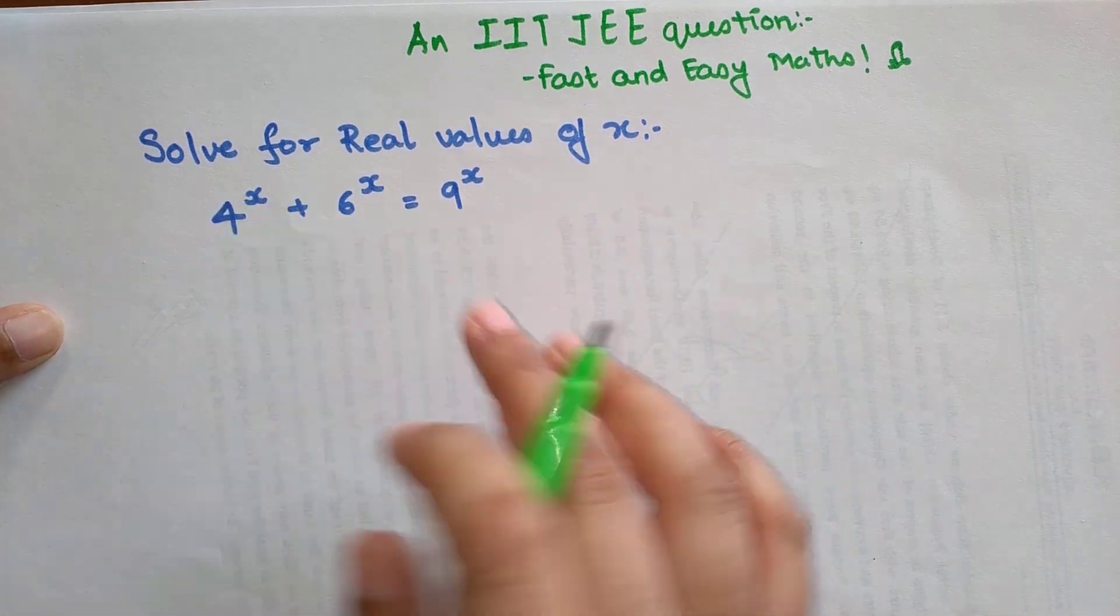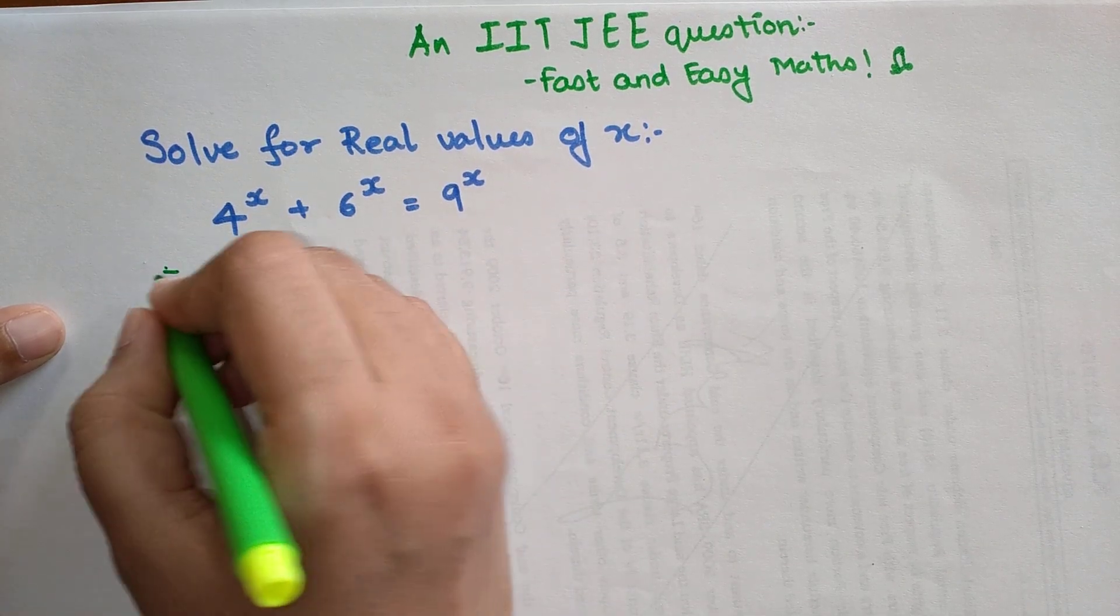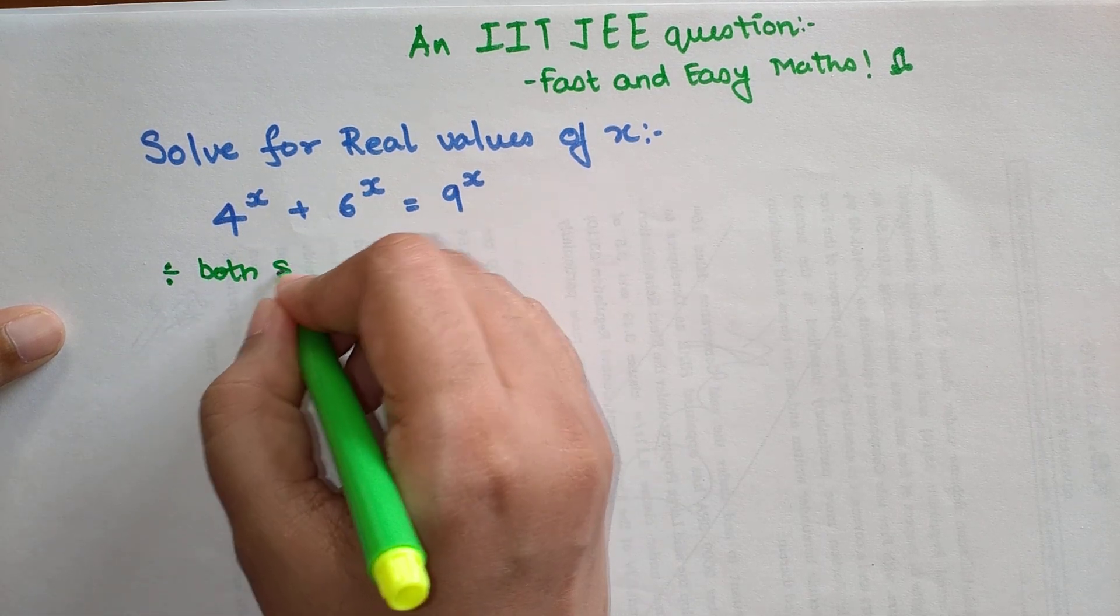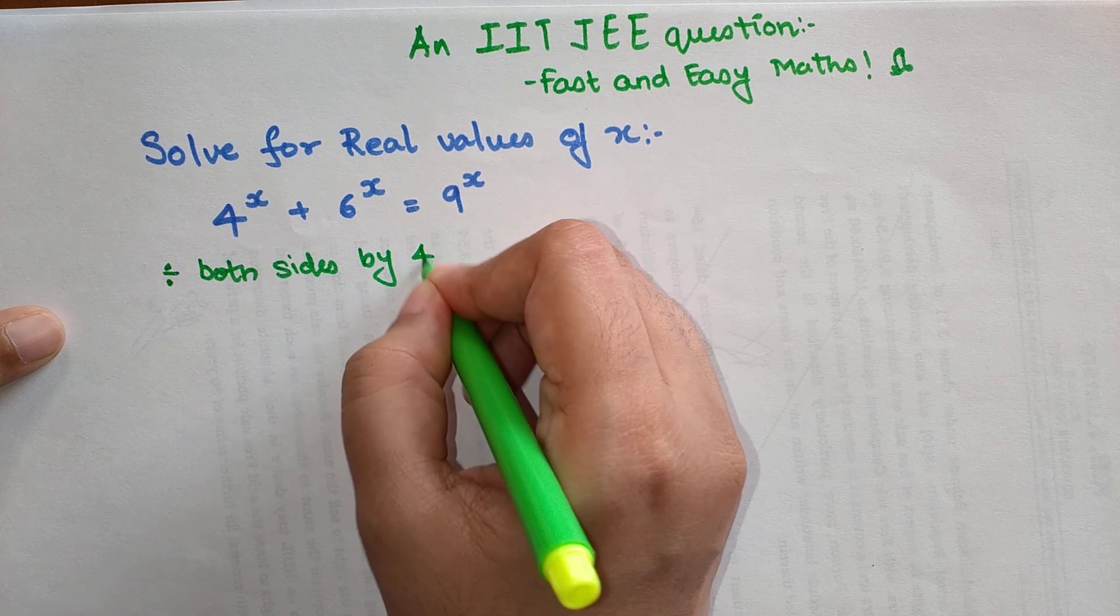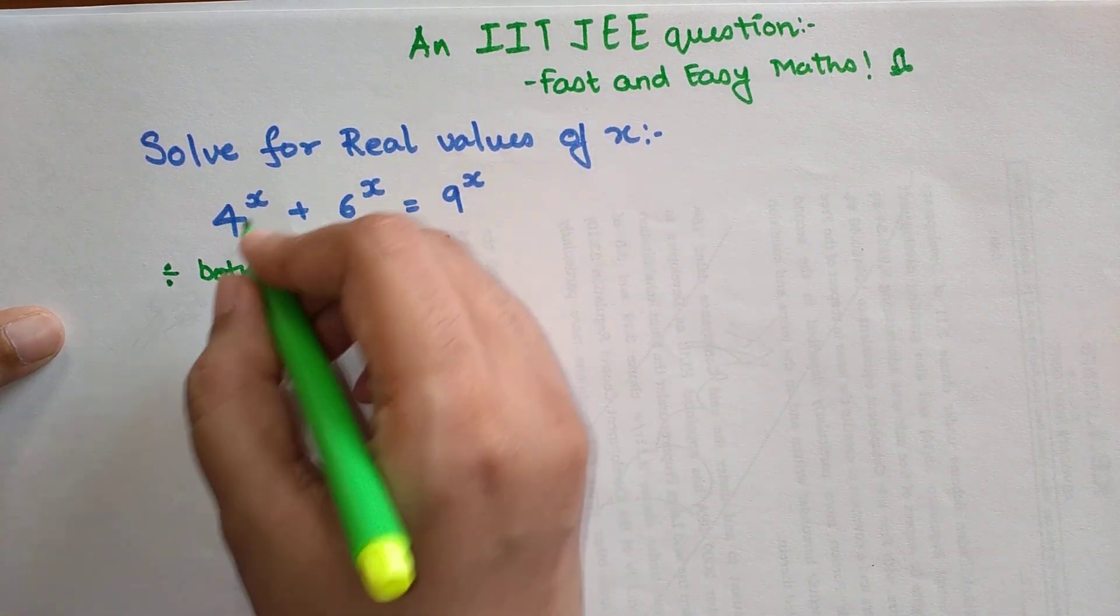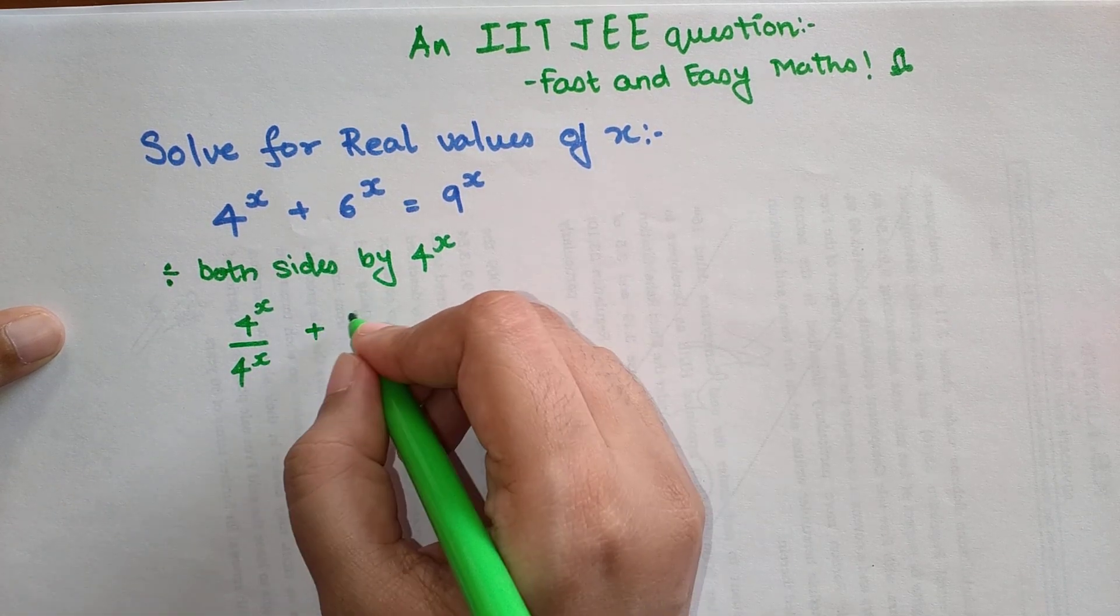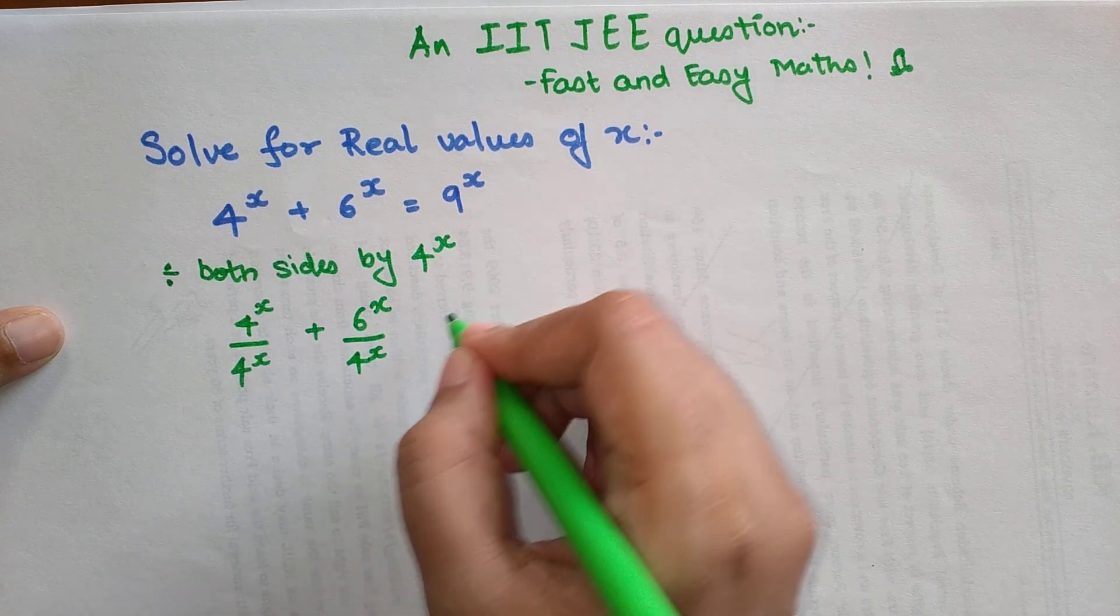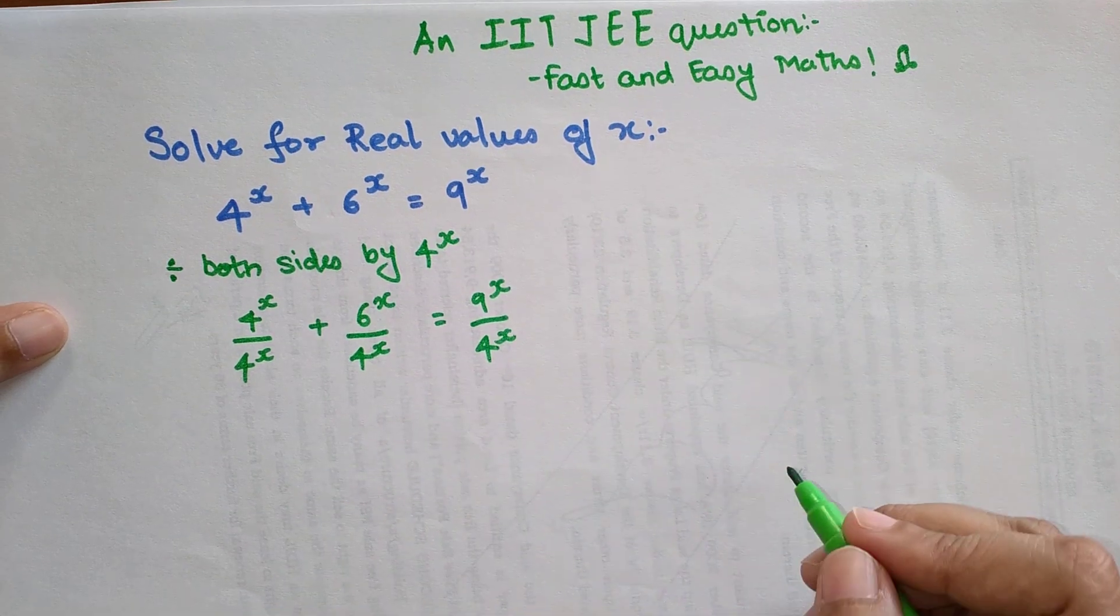The first step is dividing both sides by 4 raised to x. When I do that, I get 4^x upon 4^x plus 6^x upon 4^x equals 9^x upon 4^x.